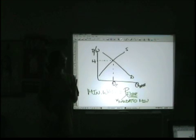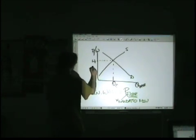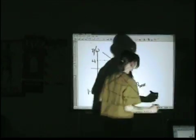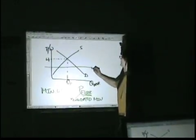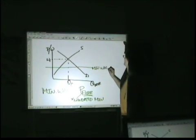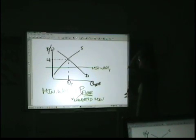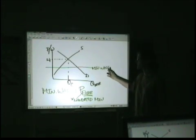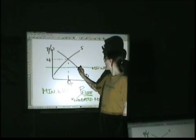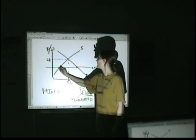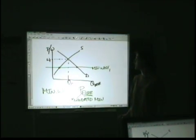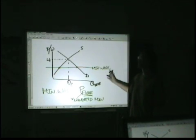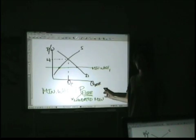If the minimum wage is below the equilibrium — let's call this minimum wage one — then the floor is too low. That means that at this price, the demand for labor would be a lot higher than what workers are actually willing to supply in the market. This minimum wage would have zero effect whatsoever on what happens in this particular labor market.